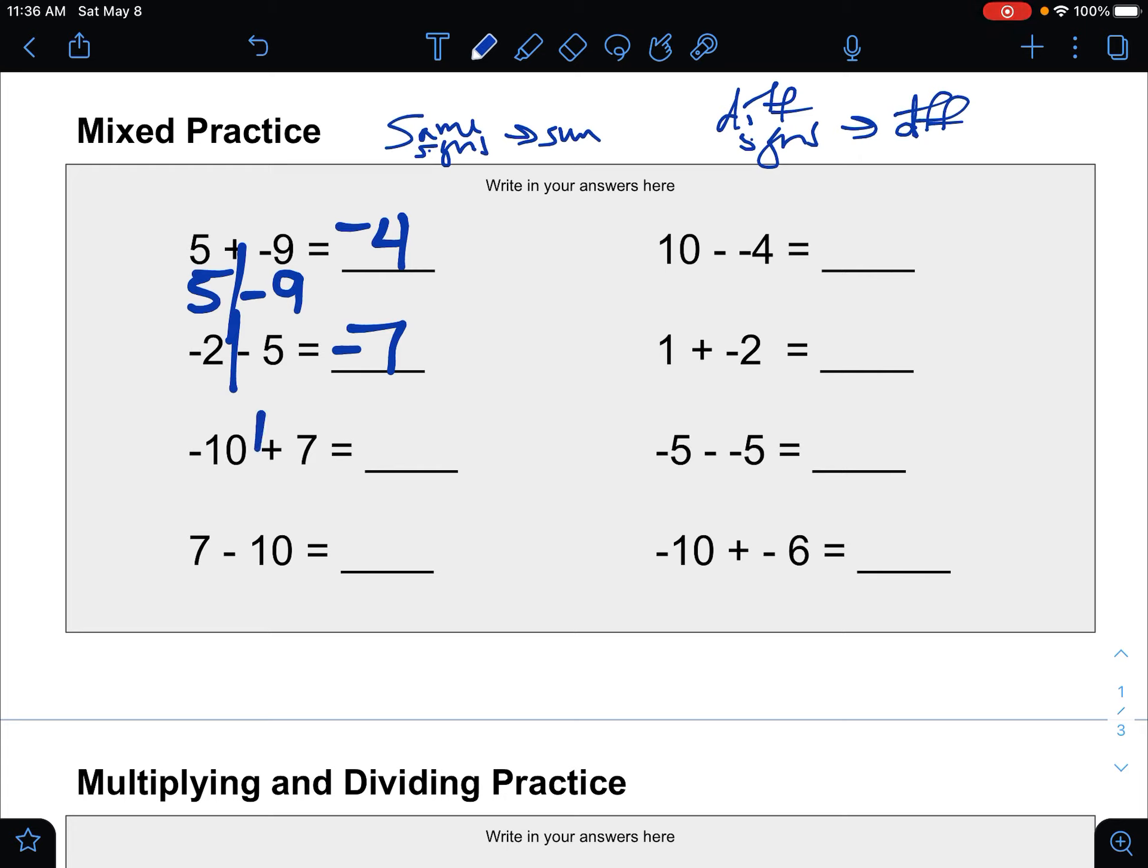For the one after it here, negative 10 plus 7. This is again different signs, find the difference. The negatives have 10, the positives have 7, so the negatives have how many more? Well, that would be 3 more, and it's negative because the negatives have more.